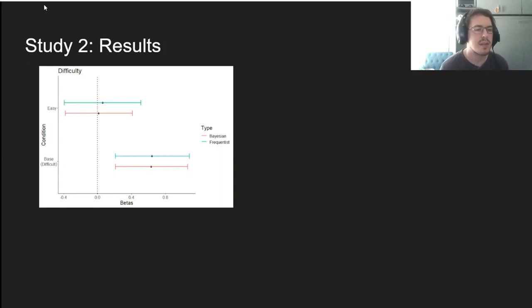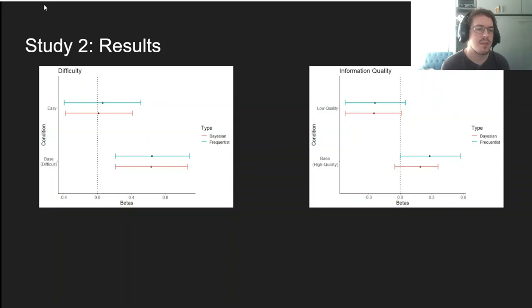Onto our results, we found that participants who read our difficult comment expected the article itself to be significantly more difficult than those in the easy or control conditions, supporting our hypothesis about a similarity heuristic. Similarly, those who read the high-quality comments expected the article to have greater information utility than those who read the low-quality comment.